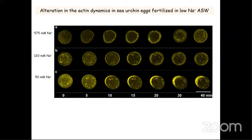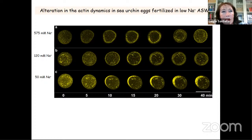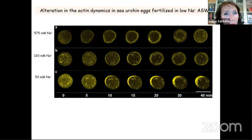We checked the actin cytoskeleton and found it was totally disarranged. Our conclusion is that abnormal development is not the result of polyspermic fertilization — not the result of multiple spindle formation from extra centrosomes introduced by multiple sperm — but it's just because this actin cytoskeleton has been altered, and this altered the embryonic development.